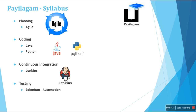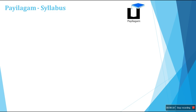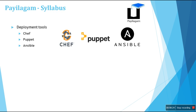Next are deployment tools — these are very important and fall under automation: Chef, Puppet, and Ansible. These tools help you deploy software in a client environment or test environment. You write a script to install and configure the software using Chef, Puppet, or Ansible.